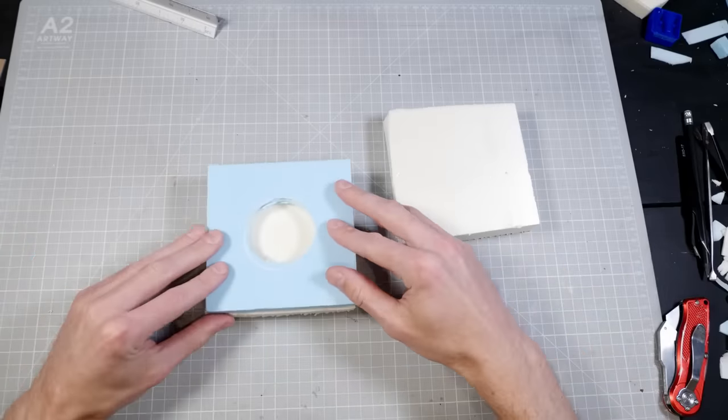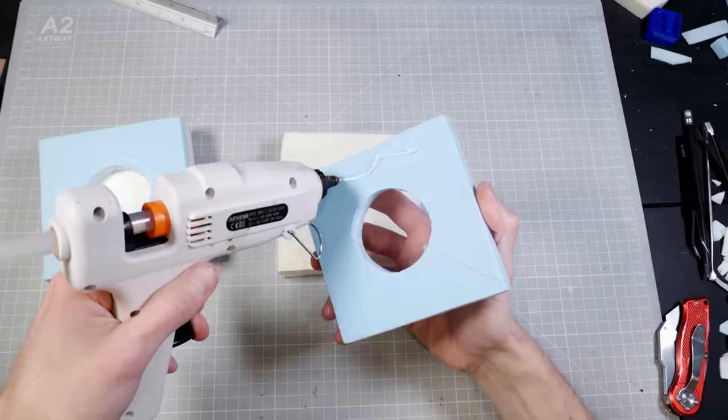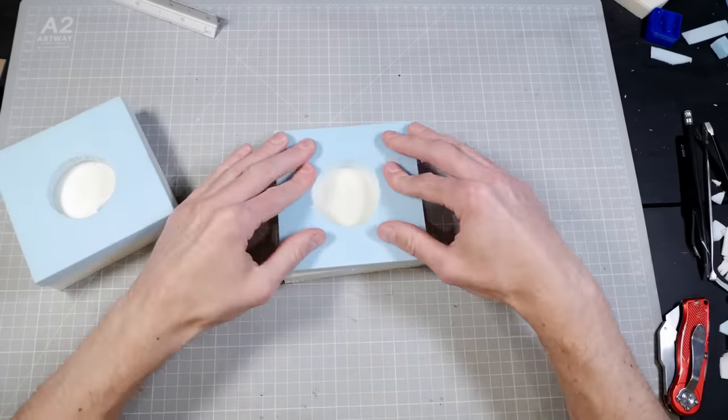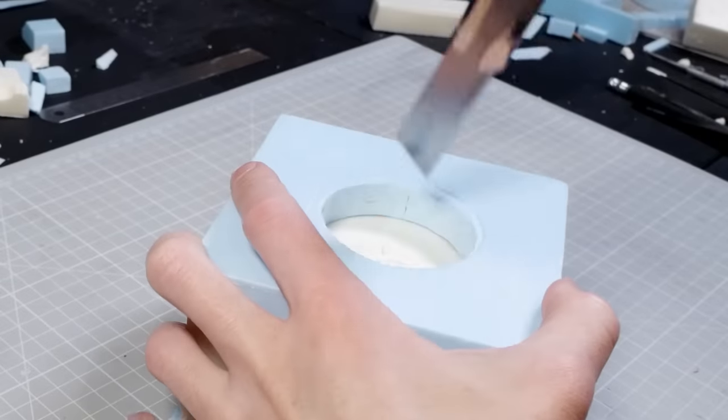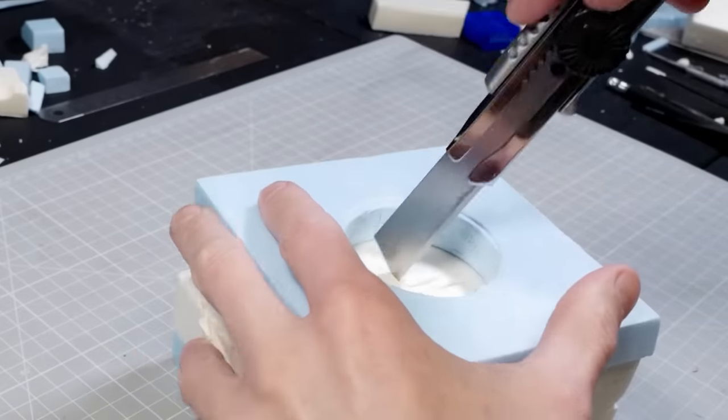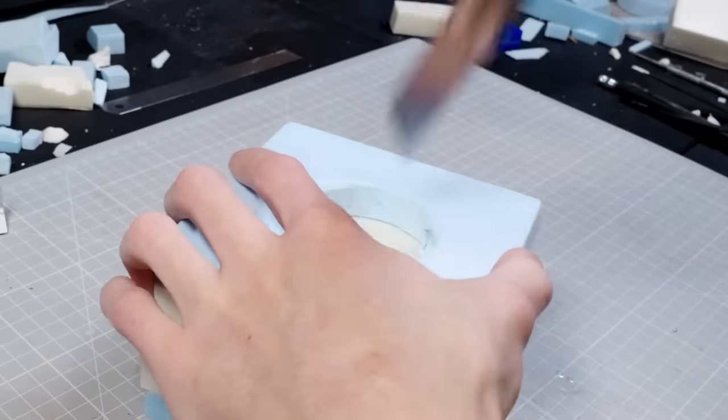Now I can glue the blue onto the yellow and start cutting all the way through the foam. I'm not worried about being a perfect cut since the walls are going to be chunks of stone and dirt anyways so really the messier the better here.